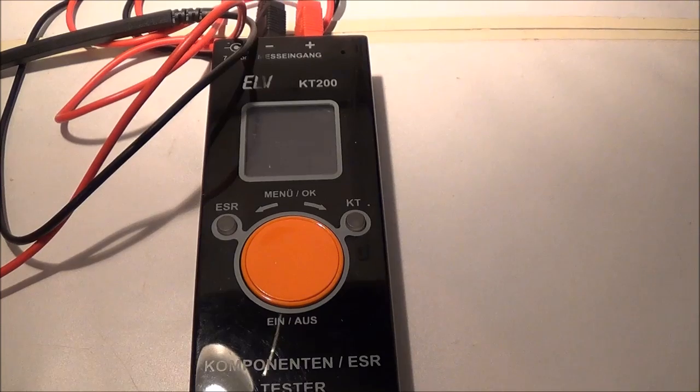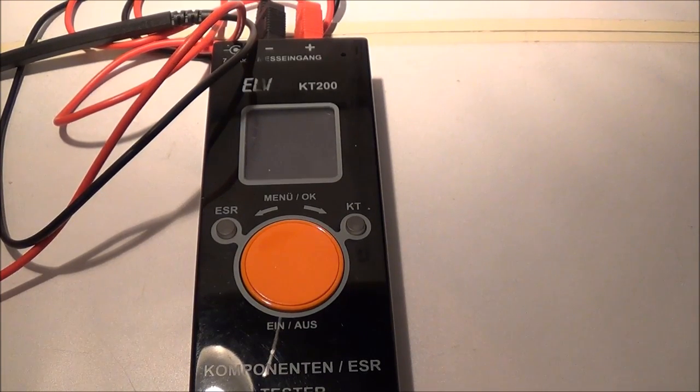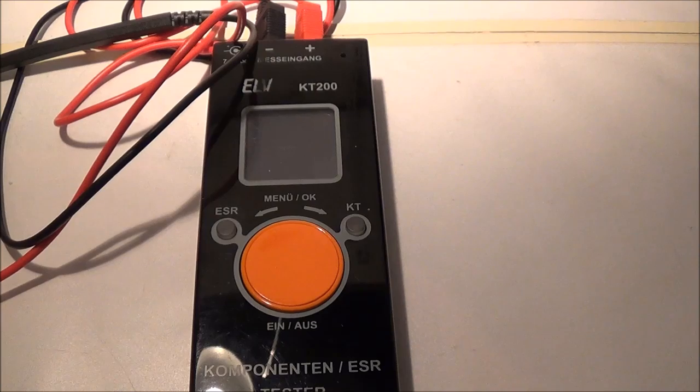Today I'm going to demonstrate my ELV KT200 combination curve tracer and ESR meter. It came as a kit and is made in Germany. It cost me approximately $85. I'm going to focus on the curve tracer component tester function in this video.